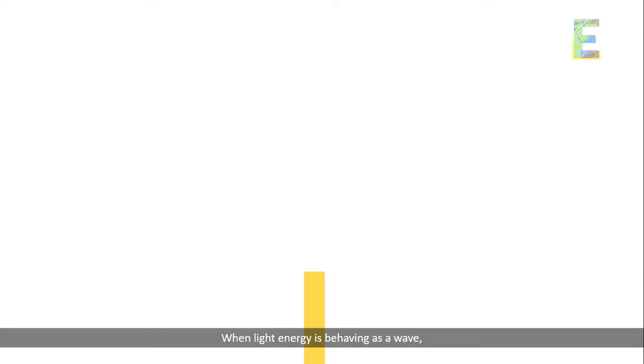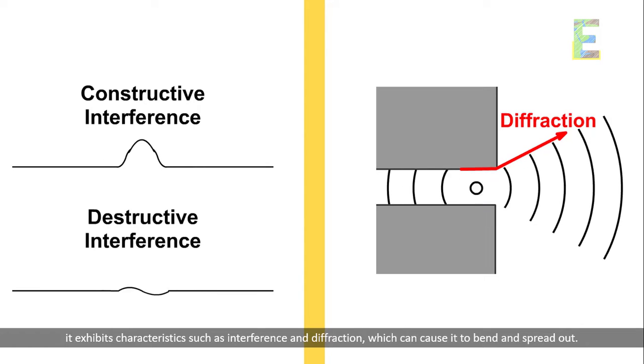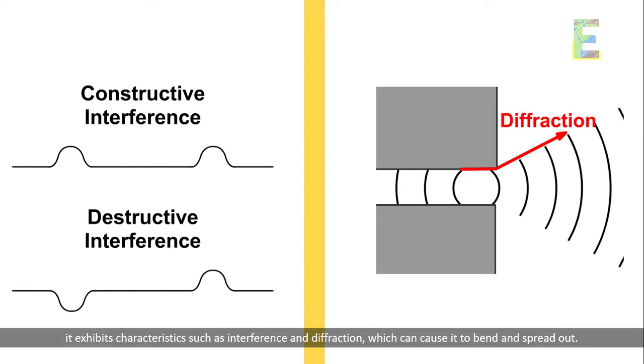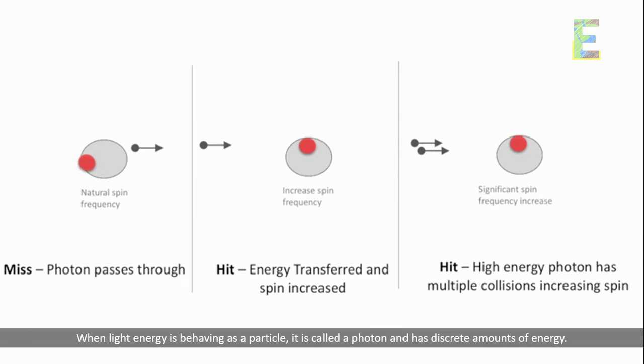When light energy is behaving as a wave, it exhibits characteristics such as interference and diffraction, which can cause it to bend and spread out. When light energy is behaving as a particle, it is called a photon and has discrete amounts of energy.